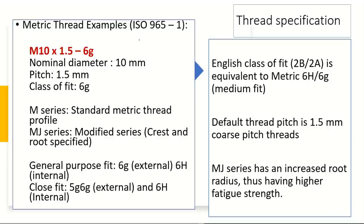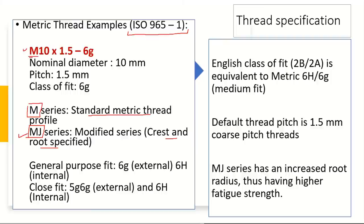Next, let's take a look at metric thread examples. Metric threads always start with either the letter M or the letters MJ. The M series stands for the standard metric thread profile, while the MJ series is a modified series where the crest and root diameters are specified. The MJ series has an increased root radius, giving it much higher fatigue strength compared to the M series. The number after M or MJ stands for the nominal diameter — 10 millimeters in this case — followed by the pitch, 1.5 millimeters.